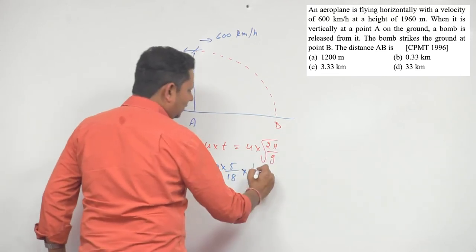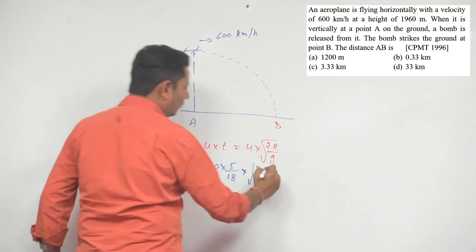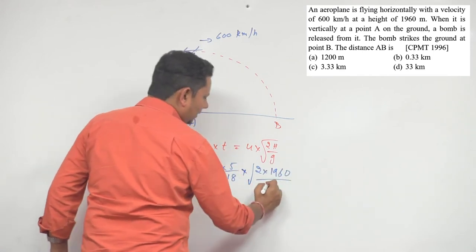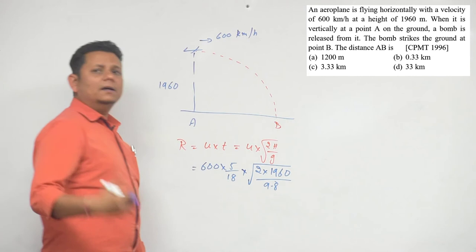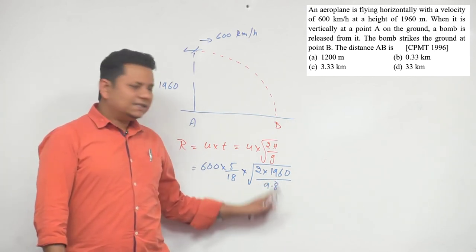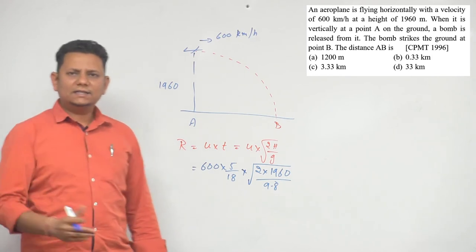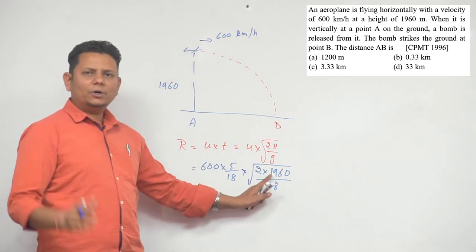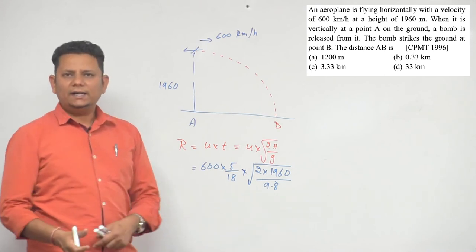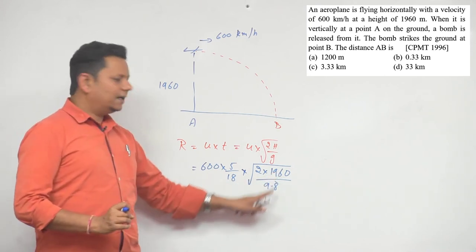Multiplied by under root of H. 2H's value is 1960 divided by G. G's value we'll use as 9.8. With practice you'll notice that when you see factors like 1960 or 9.8 or 4.9, in all those cases if it's being divided by G, take G's value as 9.8. 9.8 will directly cancel out.